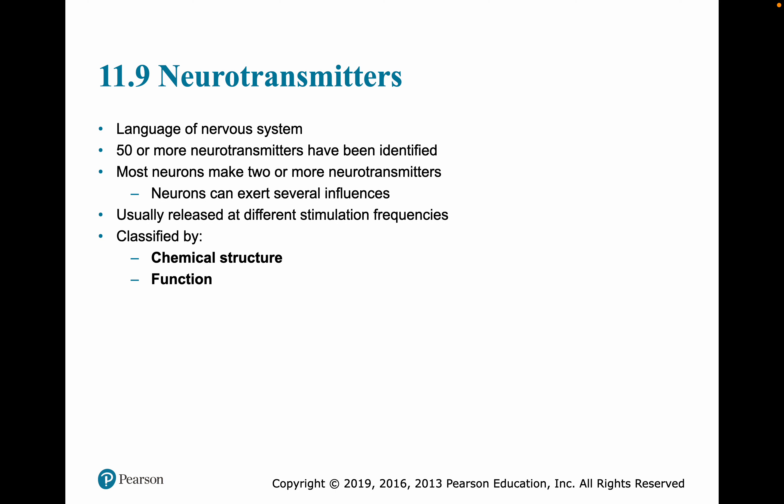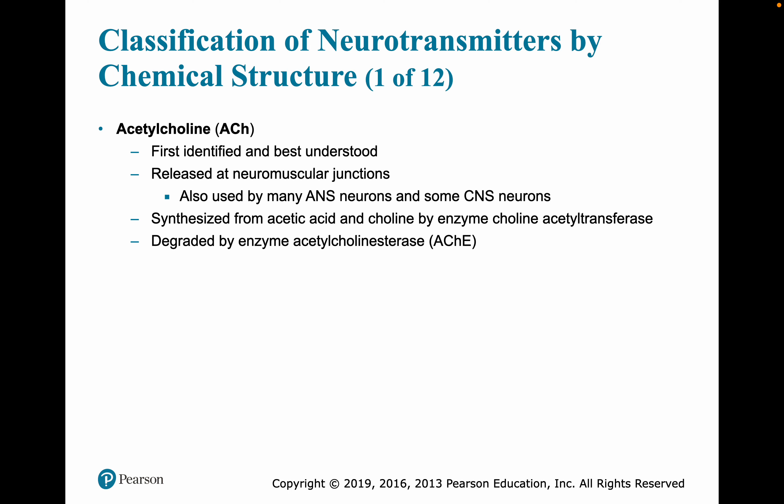Neurotransmitters are the language we use in the nervous system. There are at least 50 neurotransmitters we've identified. Most neurons are going to make two or more neurotransmitters, and they can exert several different influences, usually released at different stimulation frequencies. Neurotransmitters are classified by their chemical structure and by their function. Acetylcholine is the first identified and best understood neurotransmitter. It's the one we saw at the neuromuscular junction and is also used in the autonomic nervous system and some central nervous system neurons. It's synthesized from acetic acid and choline by the enzyme choline acetyltransferase, and it's degraded by the enzyme acetylcholinesterase.